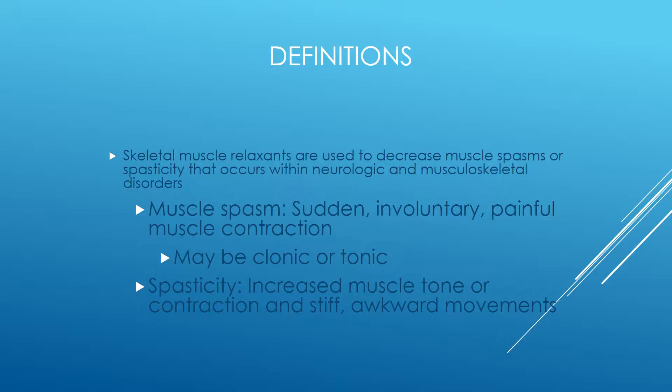Muscle spasms are sudden, involuntary, and painful — the muscle is contracting. It can be either a clonic or tonic type of muscle spasm. Spasticity involves an increase in muscle tone or contraction and stiffness, and the person will have awkward movements.